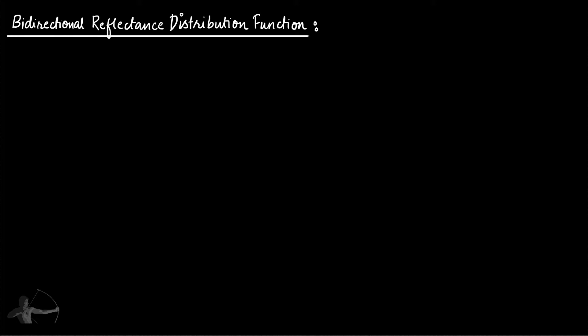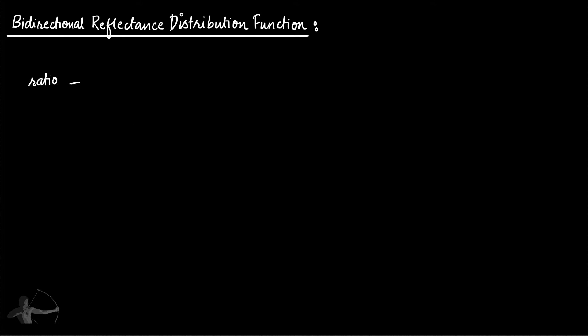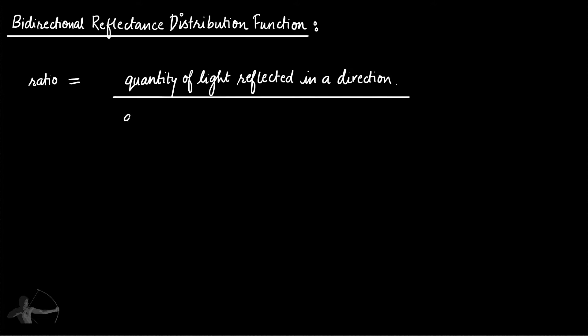Bi-Directional Reflectance Distribution Function — if we try to understand BRDF in simplistic terms or in layman's language, BRDF is a function that describes how much light will be reflected from a certain material when light arrives or falls on it. It can also be defined as a ratio of the quantity of light reflected in a direction to the quantity of light arrived from a direction.